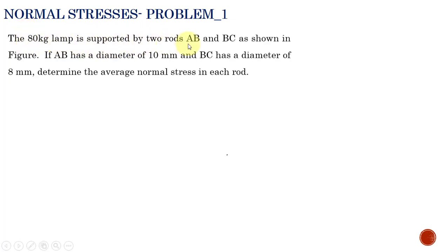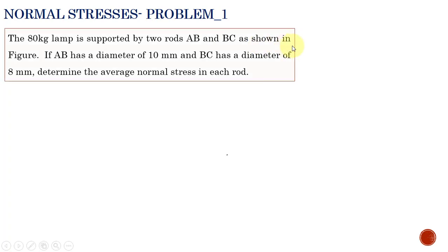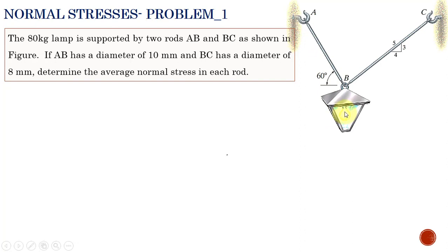An 80 kilogram lamp is supported by two rods AB and BC as shown in the figure. Rod AB has a diameter of 10 mm and BC has a diameter of 8 mm. We are asked to determine the average normal stress in each rod.